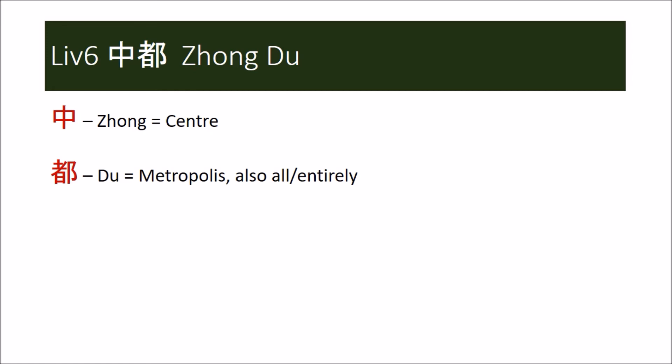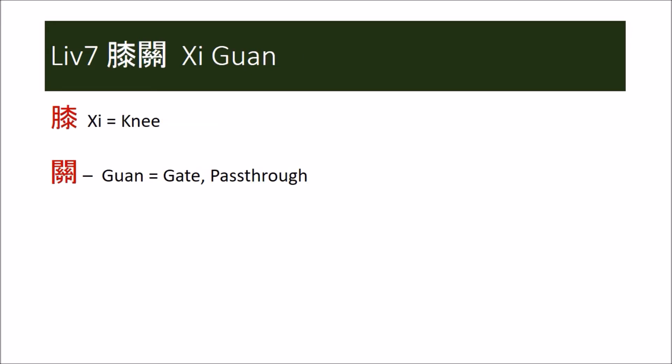Liver 7, xi guan, the knee gate, is another point I do not use except for diagnosis. ACL injuries will reflect as pain above spleen 9 and around liver 7, not so much on the inner knee, and I use this area to assess treatment points — usually spleen 5 and stomach 41.